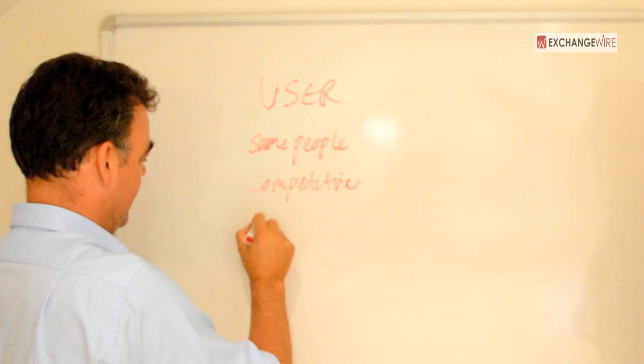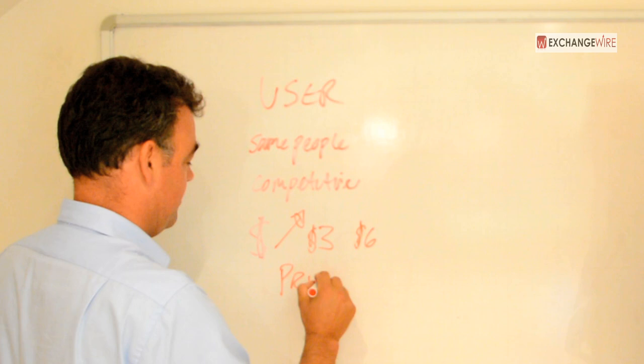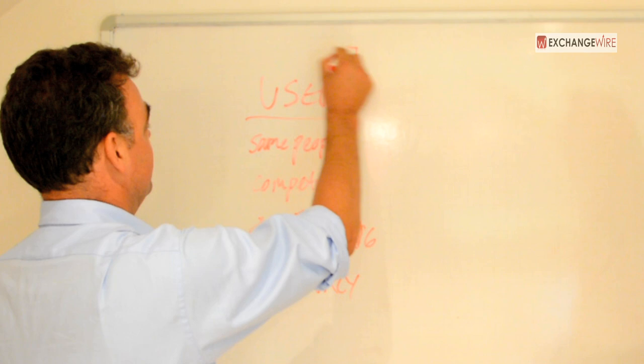Secondly, that price point — as per Forrester — is essentially going up. I think Forrester said it's about three dollars and we expect it to be six dollars soon. We've also got privacy issues. So what are we doing with third-party audiences and how are we buying on RTB? The whole industry seems to be preoccupied with this.